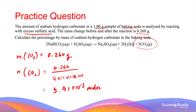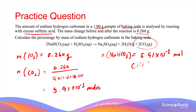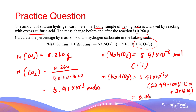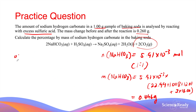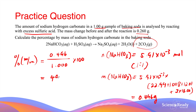Using the balanced chemical equation and the stoichiometric ratio between CO₂ and sodium hydrogen carbonate, we find they react in a one-to-one ratio. Therefore, the moles of sodium hydrogen carbonate also equals 5.91 × 10⁻³ moles. Multiplying by the molar mass of sodium hydrogen carbonate gives a mass of 0.496 grams. Finally, dividing by the total sample mass of 1 gram gives a percentage by mass of sodium hydrogen carbonate in the baking soda of 49.6%.